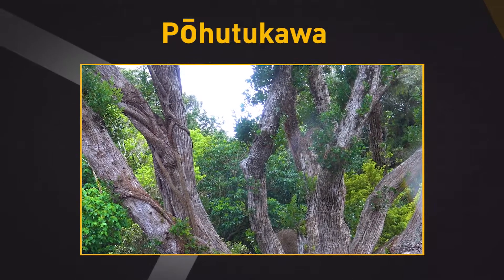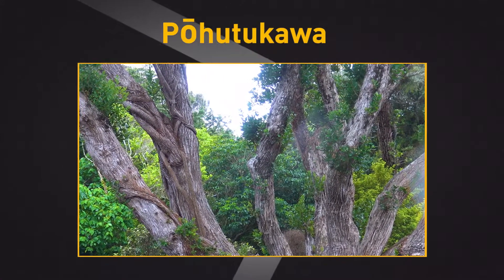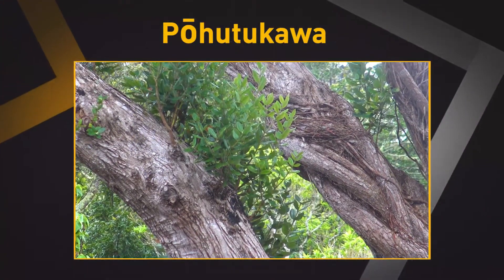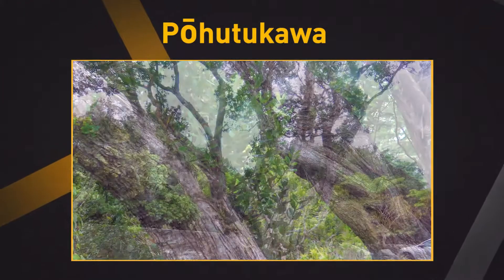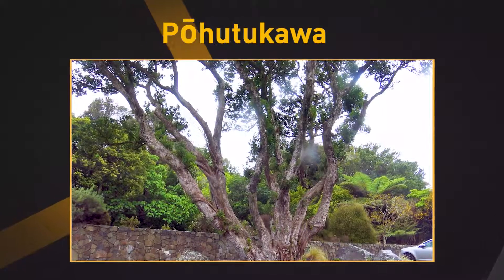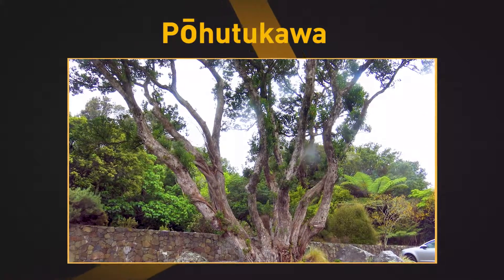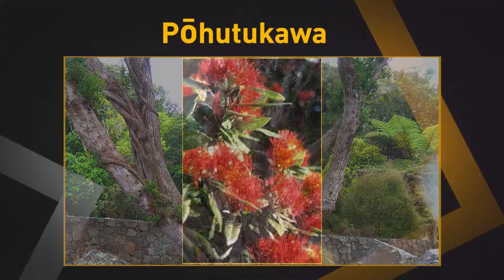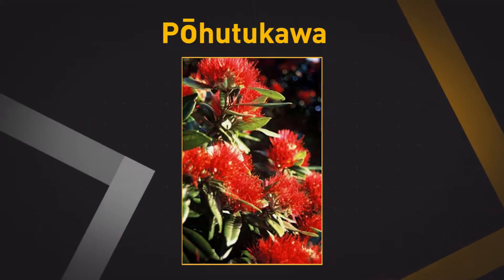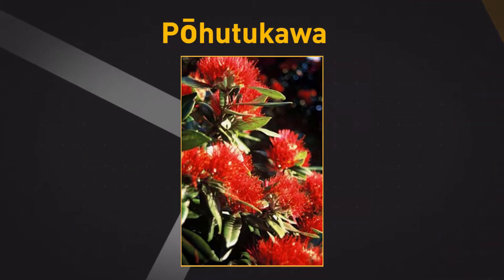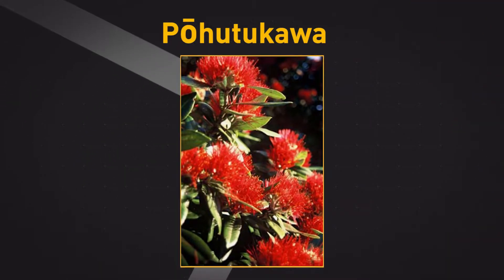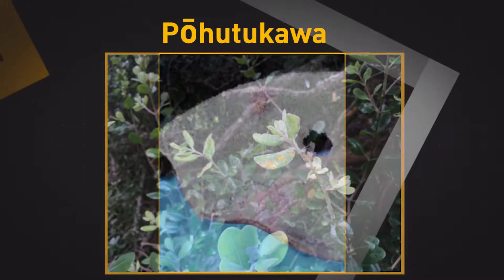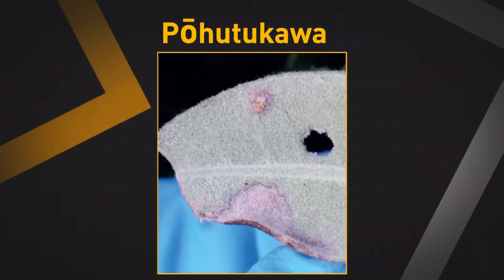Purukawa. Large sprawling many coastal trees. The leaves are livery and oval shaped. Branches can sprawl up to 20 meters, often with masses of dangling reddish rootlets with masses of red brushy leaves over Christmas. Native birds such as tui, bellbird and kaka all benefit from the presence of Purukawa trees.